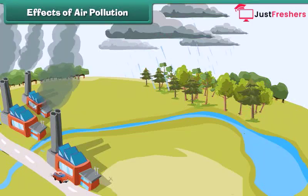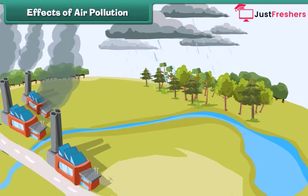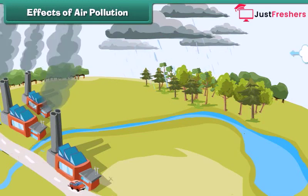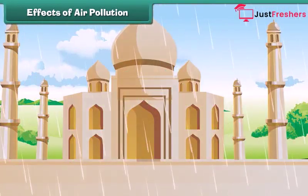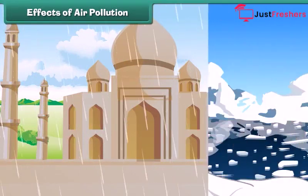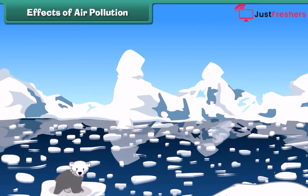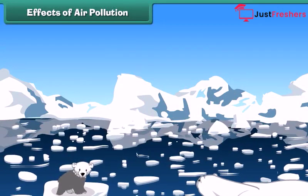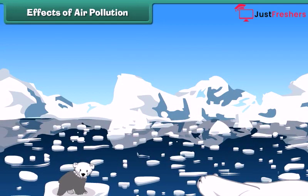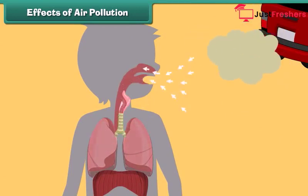This polluted air mixes with clouds in the atmosphere and brings harmful rain, also known as acid rain. Acid rain damages our buildings and monuments. Besides this, large amounts of carbon dioxide in air increase global temperatures, which subsequently results in the melting of glaciers. It also adversely affects our lungs and we suffer from respiratory disorders.